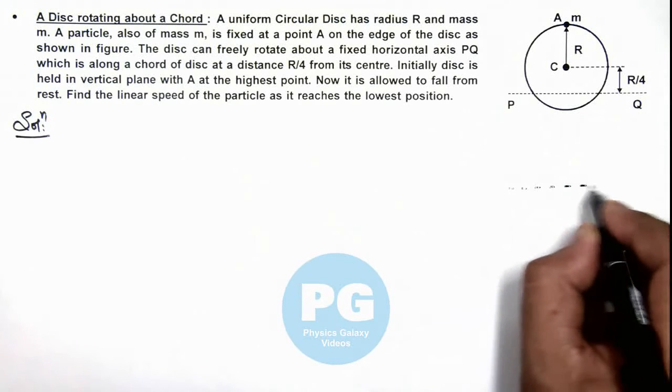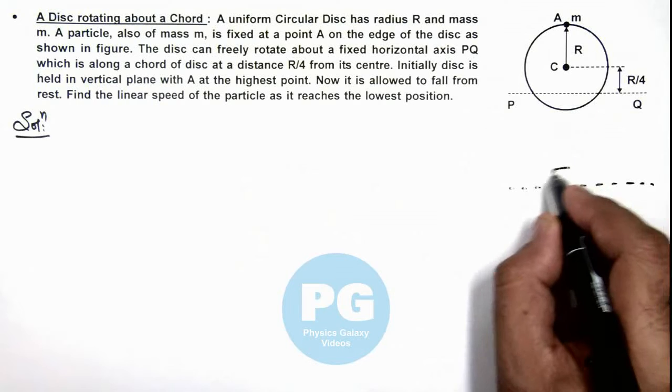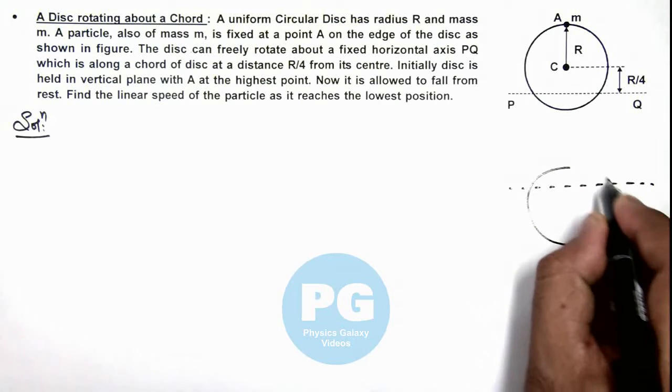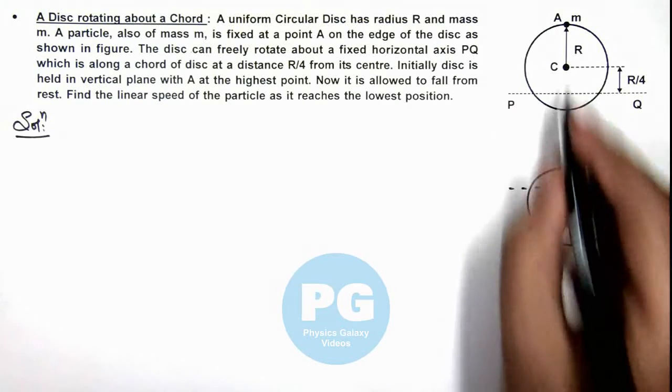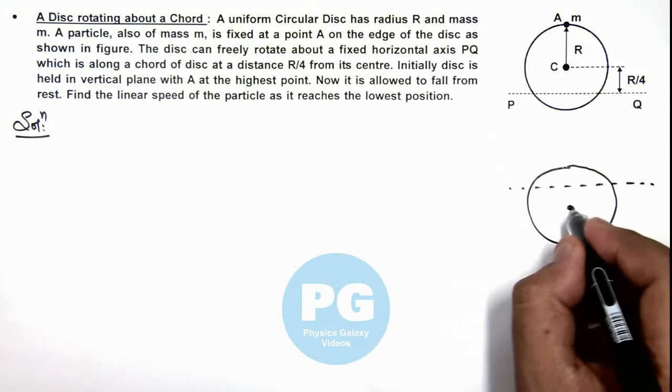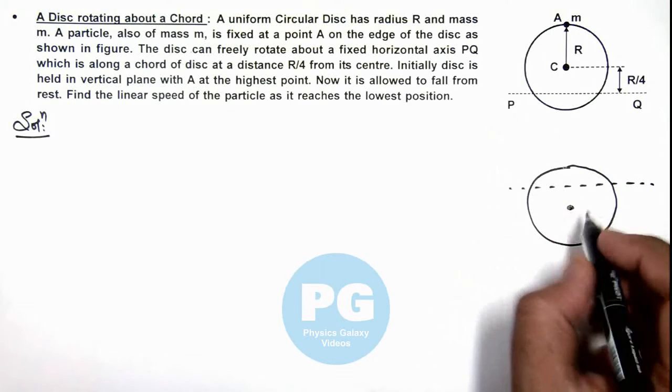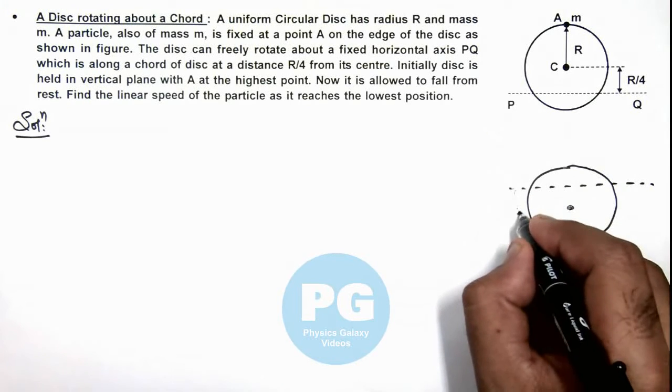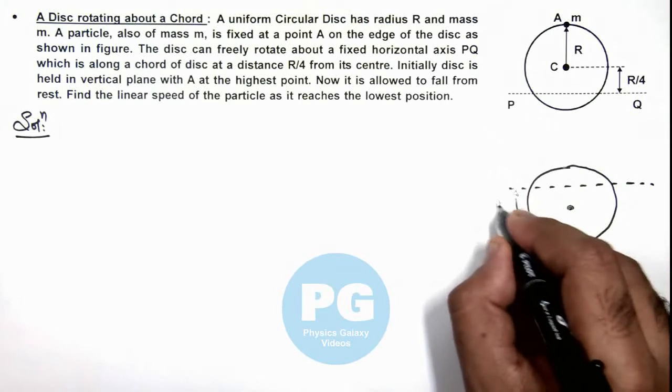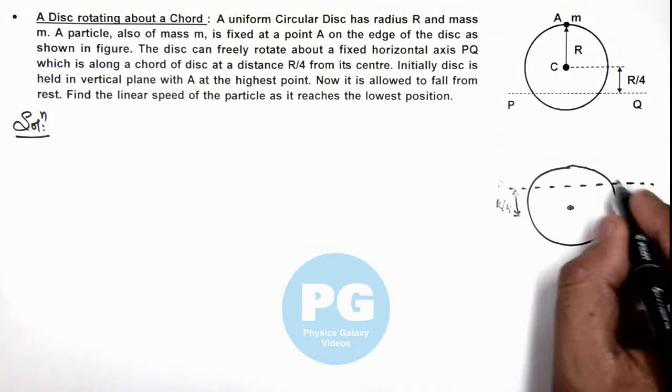Then this would be the final position of the disc when it is inverted. Point C, the center of mass of rod, will drop down by a total distance R by 2, and finally it is at R by 4 below the chord PQ.